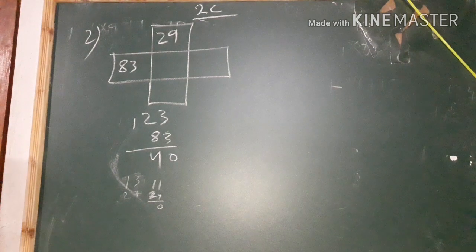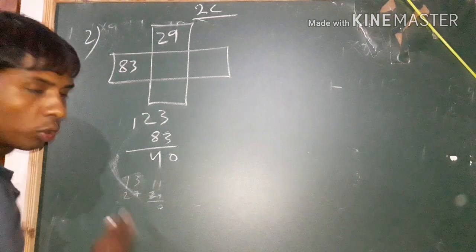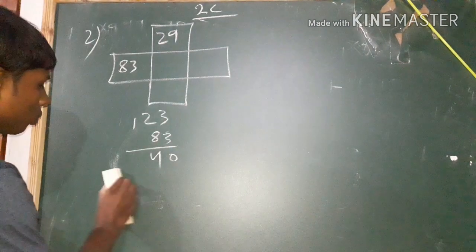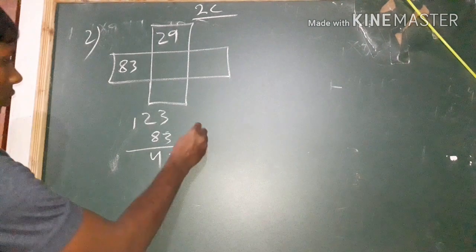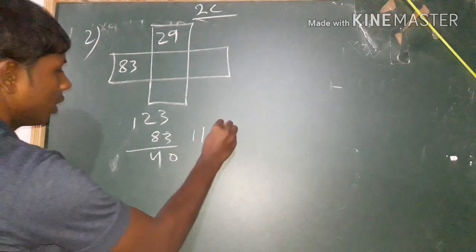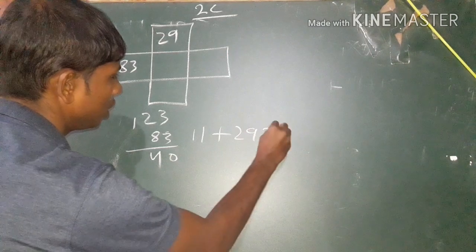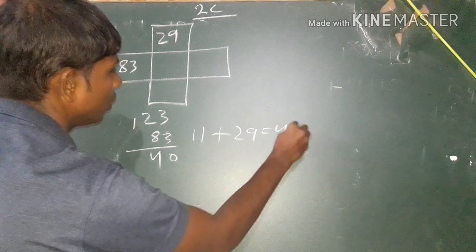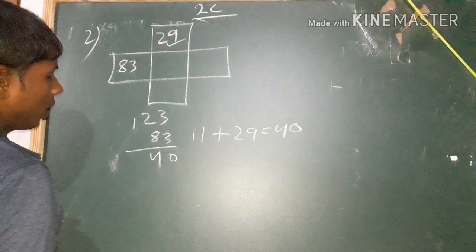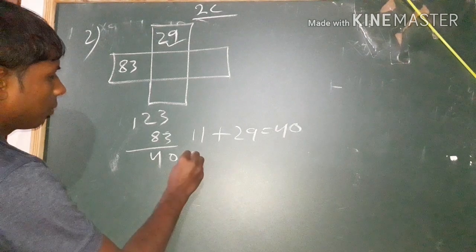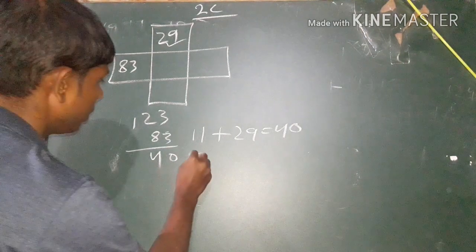Here we can see the most important point in the area of our area. The area of area is 30, but it is less important. If you are a city, you will be able to find it.